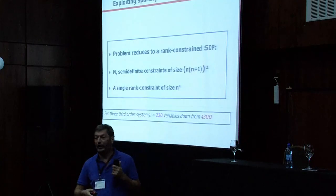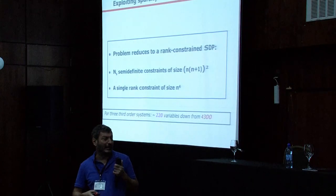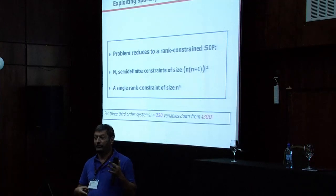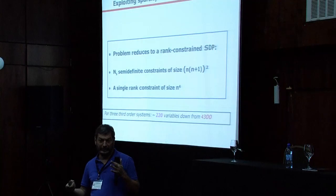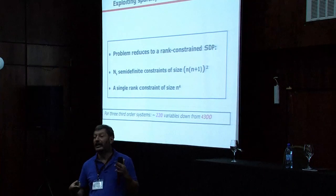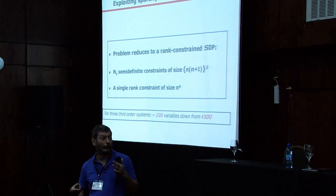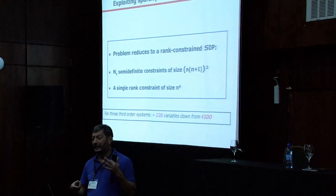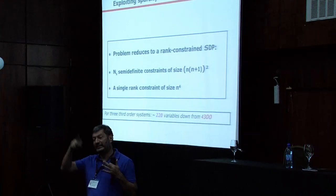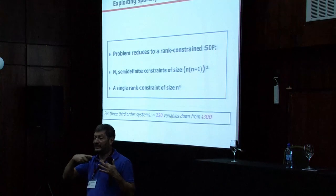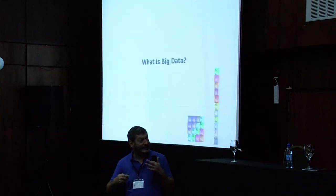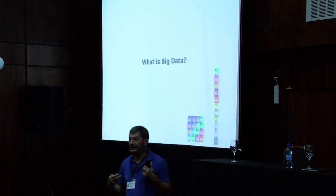Just to give you an example: if I don't use sparsity, I have something that has 4,300 variables — good luck trying to solve this using a regular SDP solver. On the other hand, if I use sparsity, I go down from 4,000 variables to 200 variables. Keeping in mind that things scale polynomially with that number, this is very substantial.